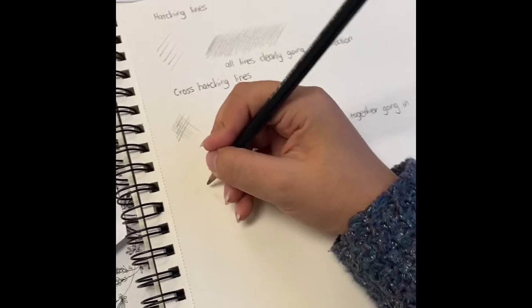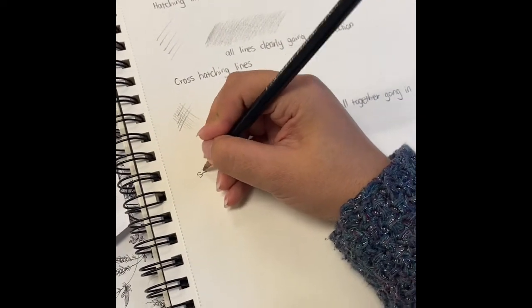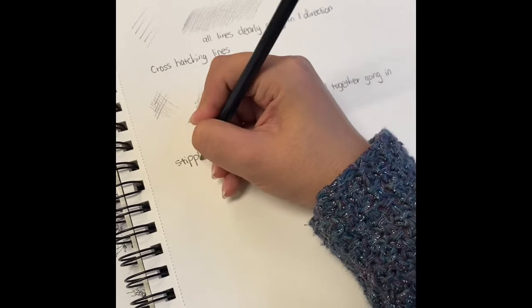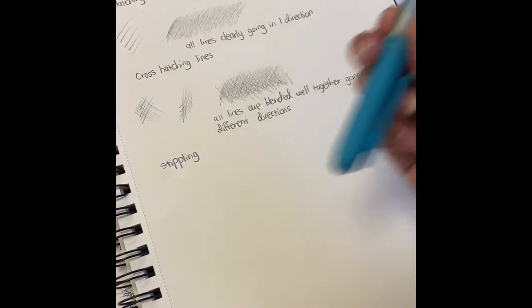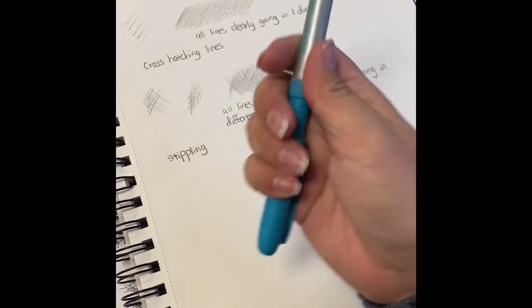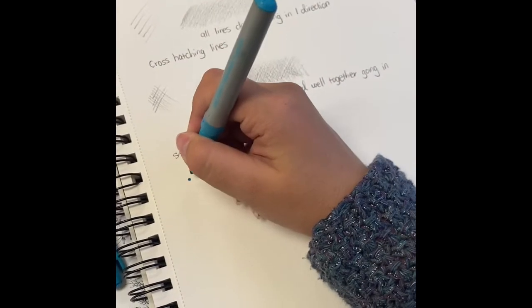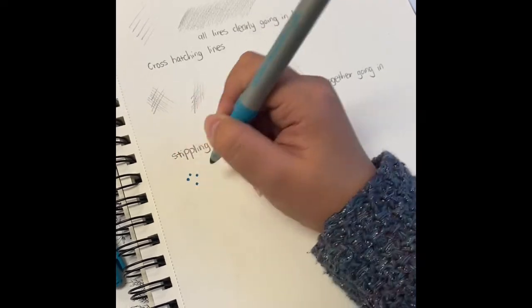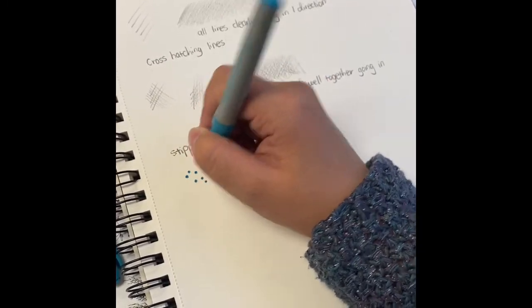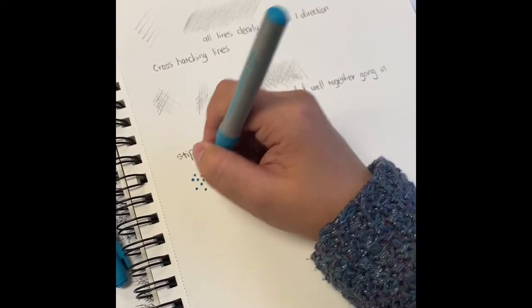So next, we're going to work on stippling. And these are not necessarily lines, but it is a method that we use to shade. So you're going to need a sharpie. And you want to make sure that you're lifting your hand directly up.